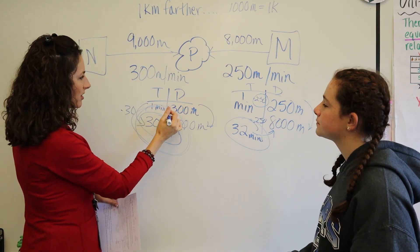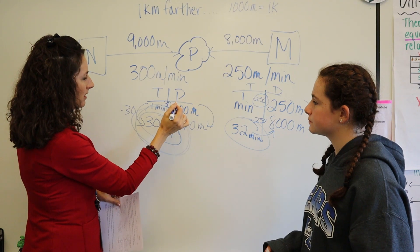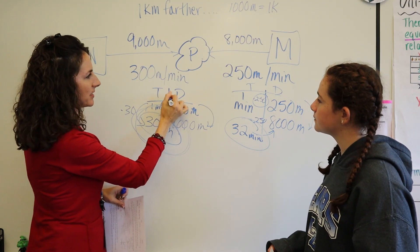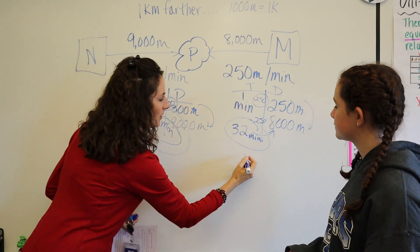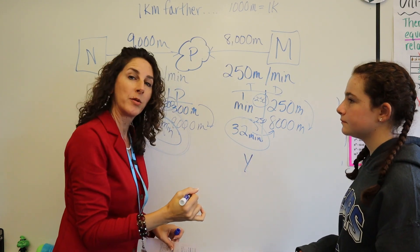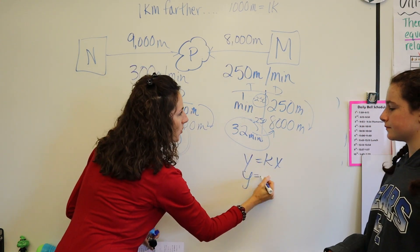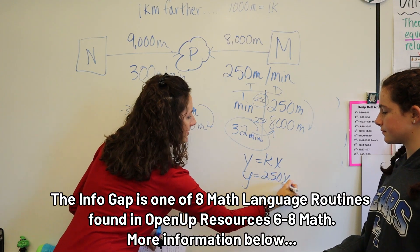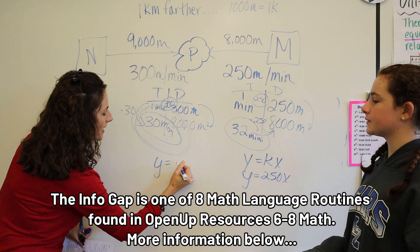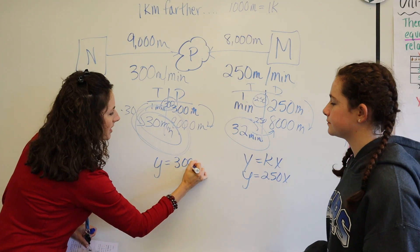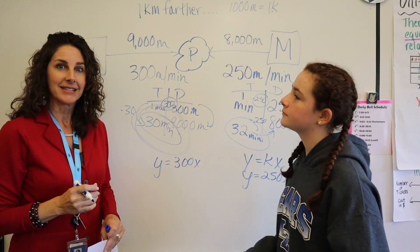So my COP here is 30. Wait, 300. And my COP here is 250. So my equation would be, I want to put it in that Y equals KX form. Y equals 250X. And my equation here would be Y equals 300X. Am I correct? Yes.